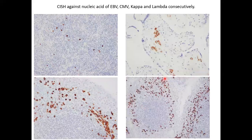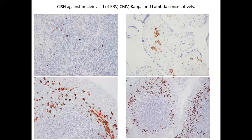Here are examples of chromogenic in situ hybridization: the Epstein-Barr virus, cytomegalovirus, kappa chain of immunoglobulins, and lambda chain of immunoglobulins — the latter two being important for diagnosing lymphoma. We see the importance of in situ hybridization for grading and diagnosis of lymphoma.